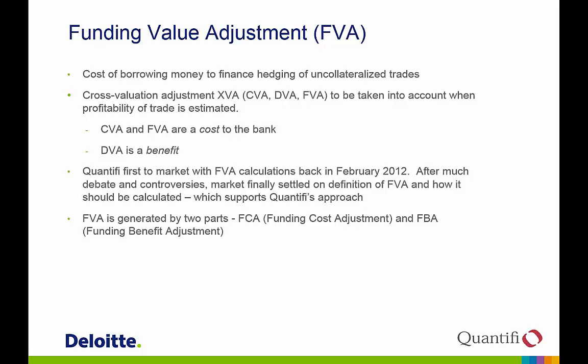Funding Valuation Adjustment (FVA) is defined as the cost of borrowing money to finance the hedging of uncollateralized trades. XVA is an abbreviation for cross-valuation adjustment, and currently includes CVA, DVA, FVA, and sometimes KVA, which stands for collateral VA. We will focus on the triad: CVA, DVA, and FVA. FVA is the latest addition to this triad and should be taken into account when the profitability of a trade is estimated. While CVA and FVA are costs to the bank, DVA is a benefit.